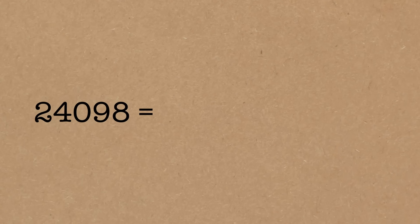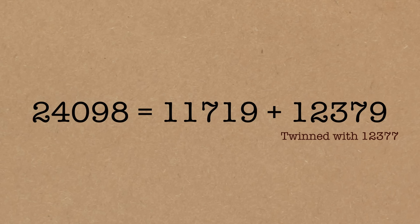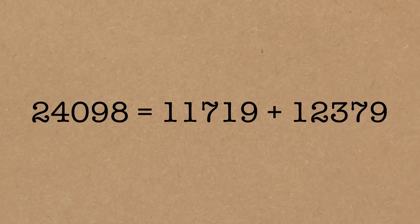I want to show you a near miss, because it's kind of funny. 24,098 can be written as two twin primes — it's 11,719 plus 12,379. Those are twin primes that add up to 24,098. But there's only one way of doing it, and that's why it's a near miss — it's almost an exception. This is the biggest near miss we've got. After that, there's more than one way of doing it; the exceptions are the ones that have zero ways of doing it.